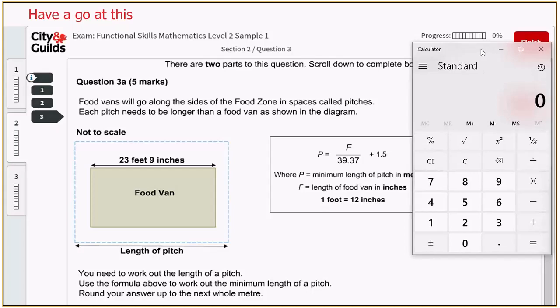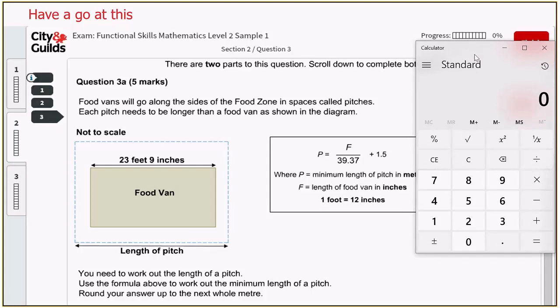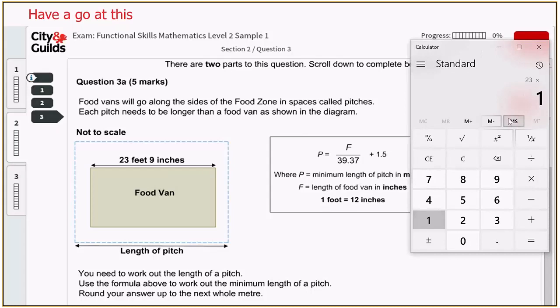Okay, that's good because that's what I'm here for. F says the length of the food van in inches. We can see that the food van is 23 feet and 9 inches. We need the length of the food van in inches. So the first thing we need to do is convert 23 feet and 9 inches into inches. It tells us that one foot is 12 inches. How can we work out what 23 feet is? Multiply 23 by 12, add 9. Fantastic. Rather than typing in 23 times 12 add 9, we'll do 23 times 12, press equals, then add 9. Our F figure is 285.